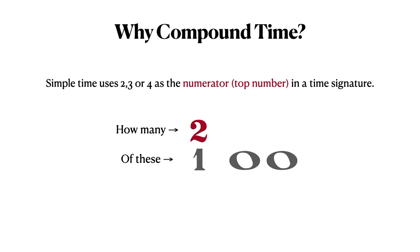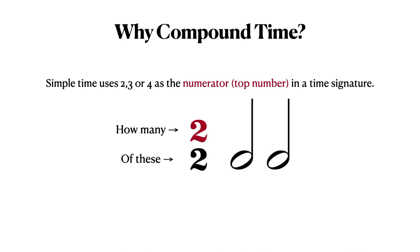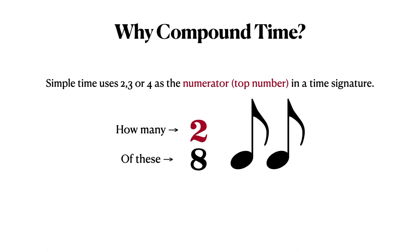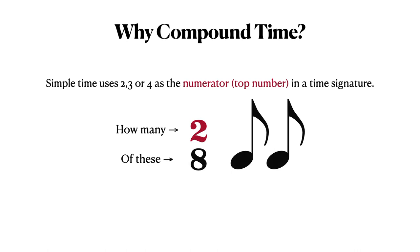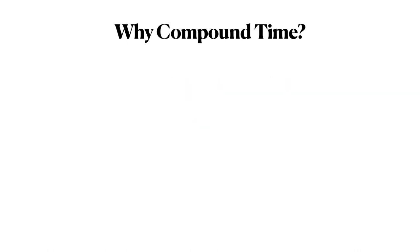Were we to replace the bottom number with a 1, it would represent a whole note, meaning that there will be 2 whole notes per measure. It follows that we can do the same thing with half notes, having 2/2 time with 2 half notes per measure, 8th notes with 2 8th notes per measure, and so on. For all of these examples, the note unit in the measure is divided into 2 parts.